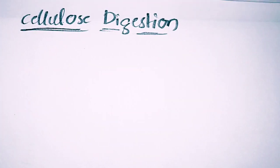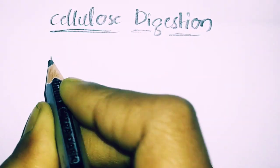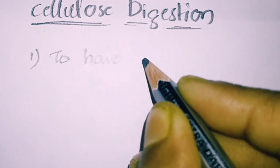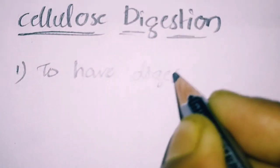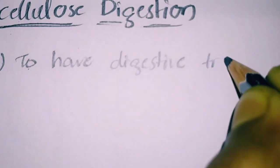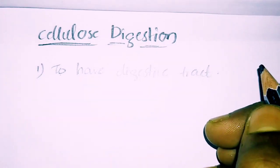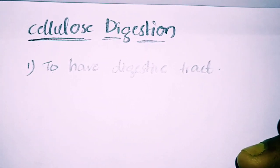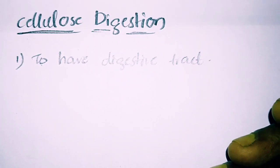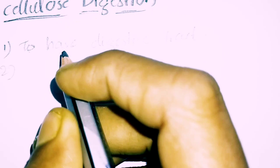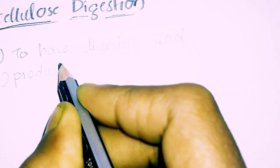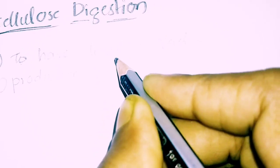The first adaptation of the organisms is to have a larger digestive tract where the food takes time for digestion and absorption. Secondly, production of fermentation chambers.